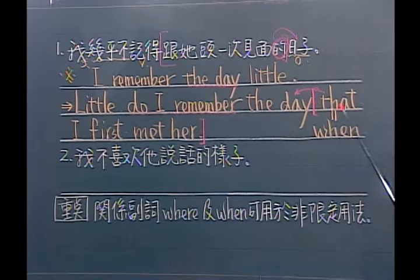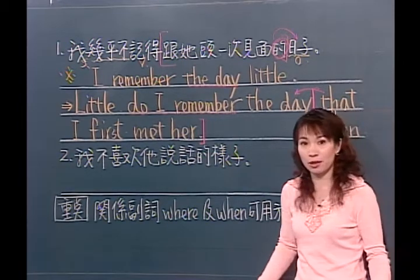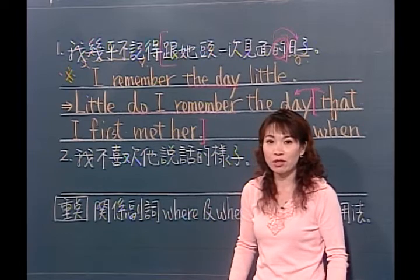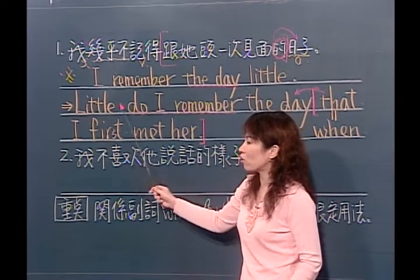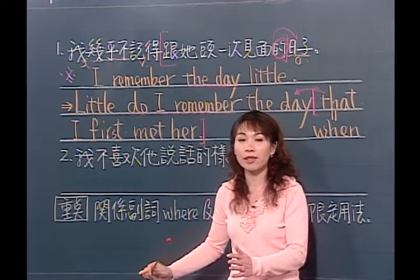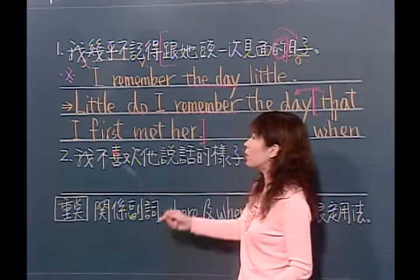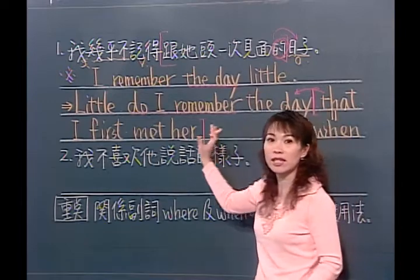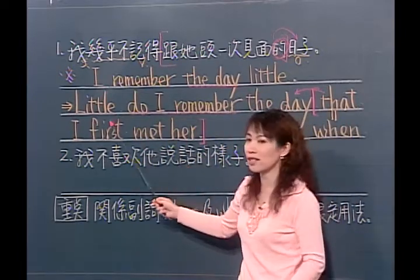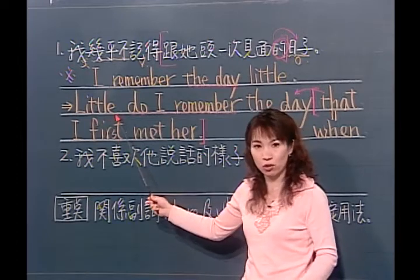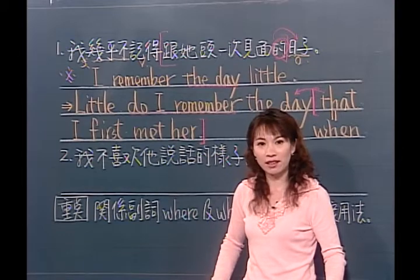其实因为方便衔接后面补充说明的这个子句，所以句型要做变化。请同学要特别注意，虽然这里出现了助动词加主词加上原型动词这样看似疑问句的句型，但是它并非疑问句，它只是一种否定字放句首的倒装句。当一个句子可以正着说、倒着说的时候，要看它后面有没有衔接对象。如果还需要补充说明the day，为了紧跟着它，little这个障碍物要把它搬开，搬到句首，记得句型要做变化。